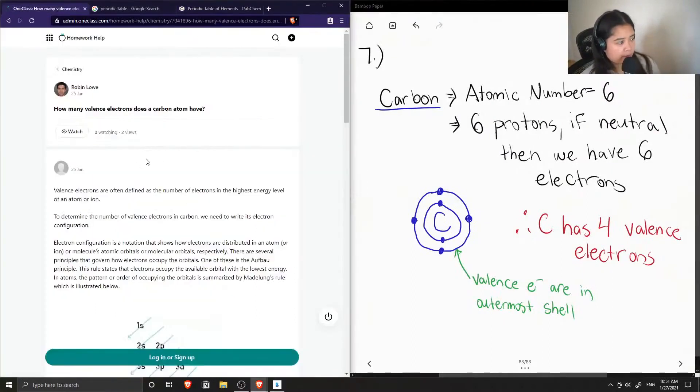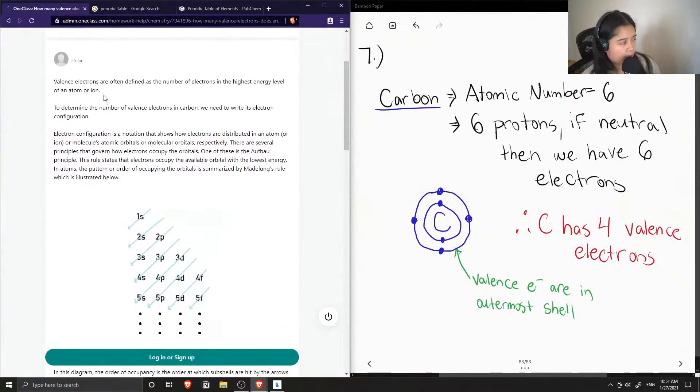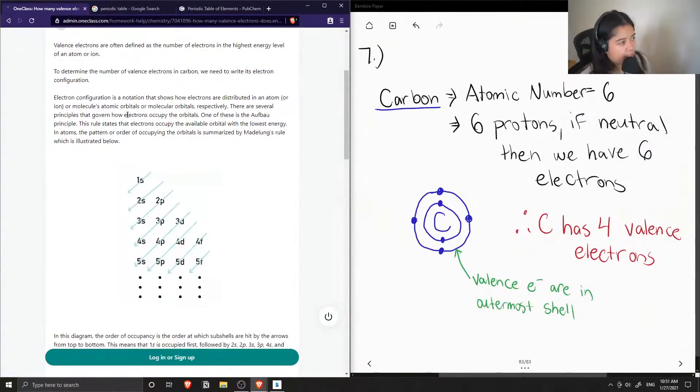Okay, so now let's see what the junior tutor said. Valence electrons are often defined as the number of electrons in the highest energy level of an atom or ion. To determine the number of valence electrons in carbon, we need to write its electron configuration. So this is another method of answering this question.